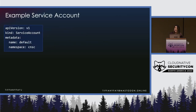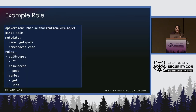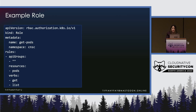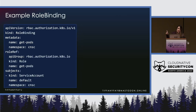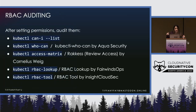This is the default service account that gets created for whatever namespace you are in — this one is cnsc, a short abbreviation for this conference. Then here is an example role for getting pods: in resources you have pods, and the verbs are get and list. The reason you have both is if you only have get, you can do kubectl get pod nginx, but if you try kubectl get pods it fails — it needs list. Then you need the role binding, which has that get-pods role and the service account. There's also kubectl auth can-i dash-dash-list for auditing, and a bunch of other non-built-in tools you can get as plugins.